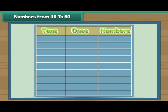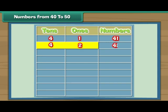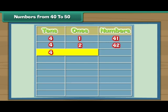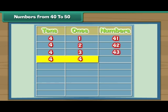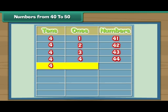Let us now complete this table. Four tens and one give the number 41. Four tens and two give 42. Four tens and three give 43. Four tens and four give 44. Four tens and five is 45.